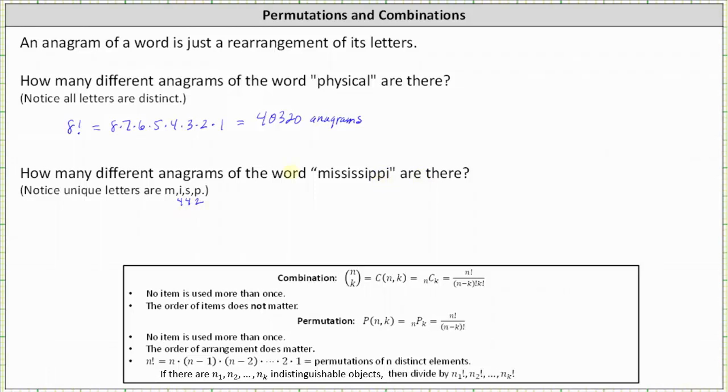If we look at our notes below, again, n factorial is equal to the permutations of n distinct elements. However, if there are n sub one, n sub two, through n sub k indistinguishable objects, then we must divide by n sub one factorial, n sub two factorial, all the way through n sub k factorial.